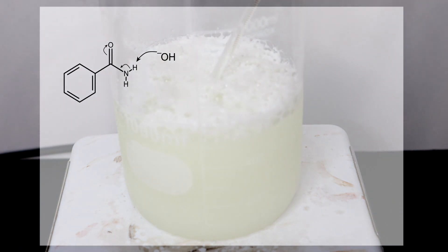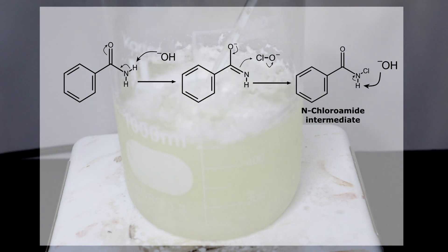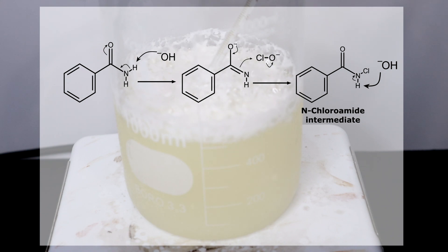In the Hoffman rearrangement reaction the hydroxide ion firstly deprotonates or removes a hydrogen atom from the amide. This deprotonated amide then reacts with the electrophilic hypochlorite anion to form an N-chloramide, in this case N-chlorobenzamide. The nitrogen in the N-chlorobenzamide is now even more acidic due to the chlorine atom withdrawing electron density from the nitrogen. By further deprotonation we form the N-chlorobenzamide anion.